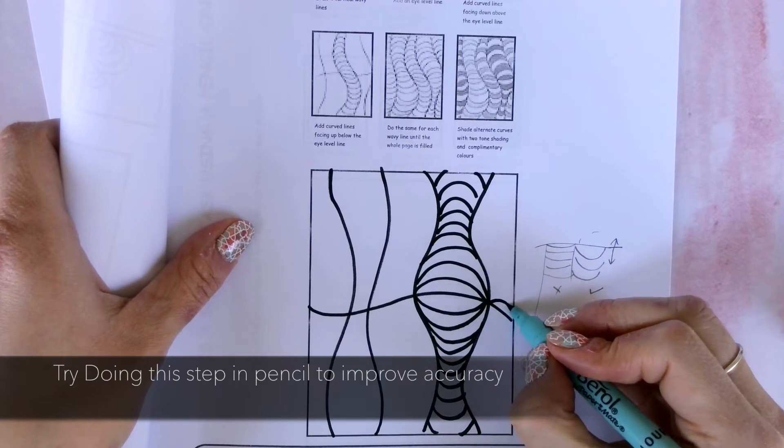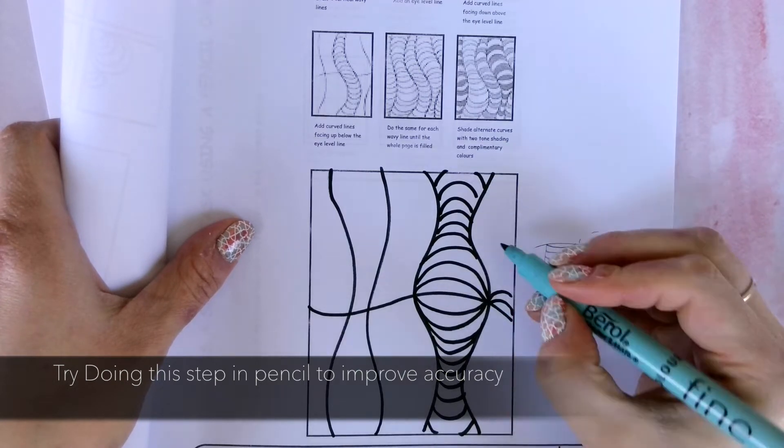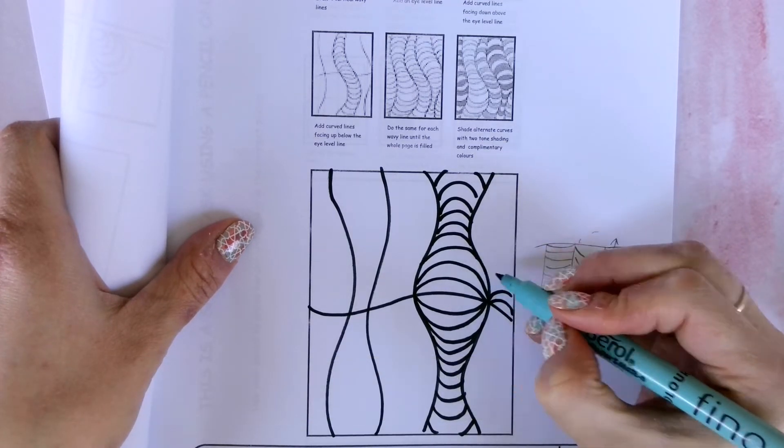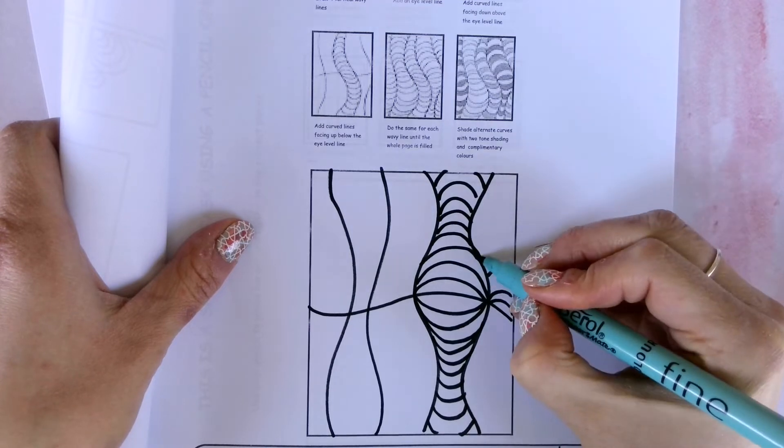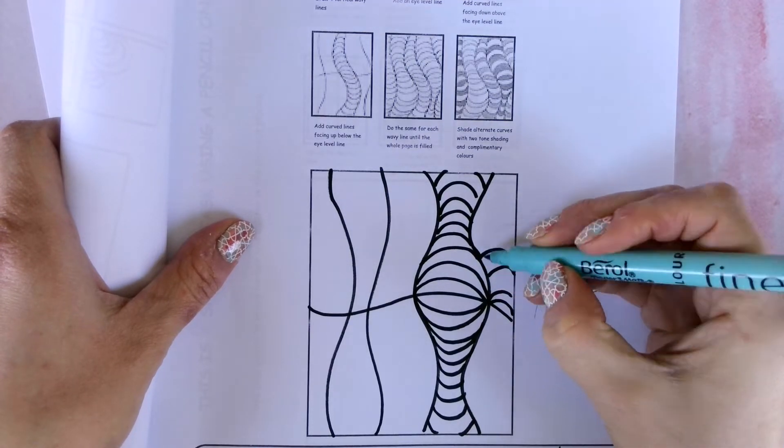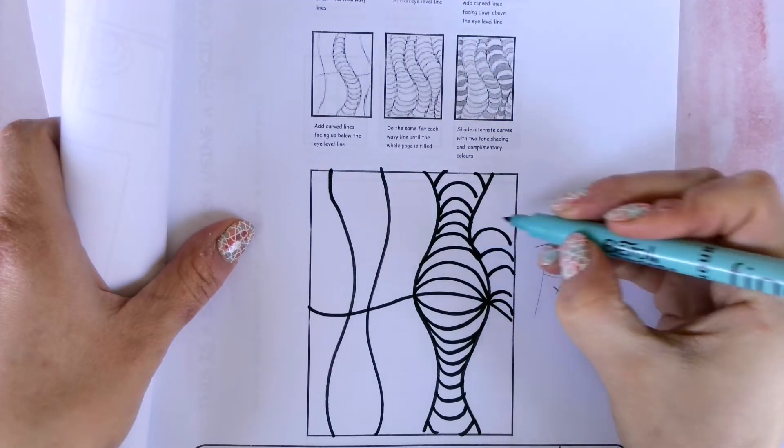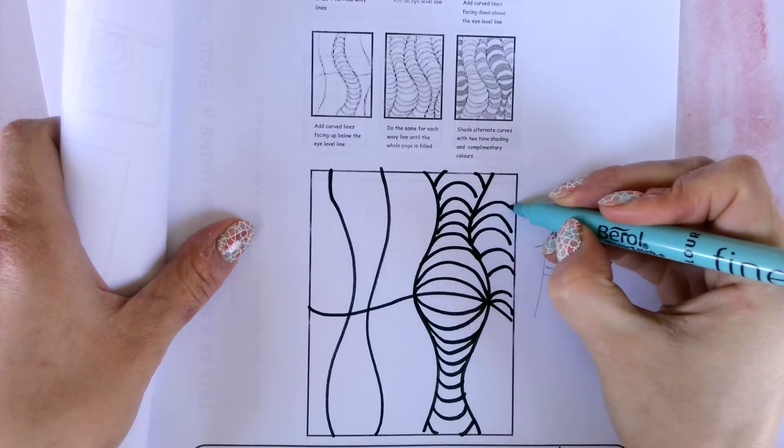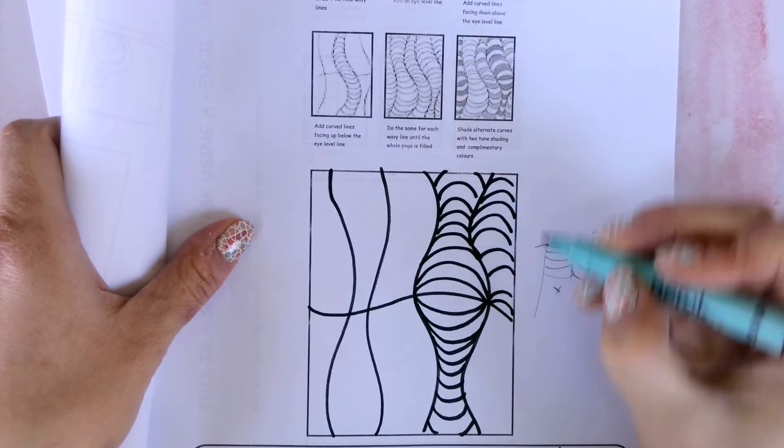Continue and try and match the starting point of the line with the line from the previous shape. That way you'll get a very nice mirrored effect. However, you might make some mistakes. Just try your best.